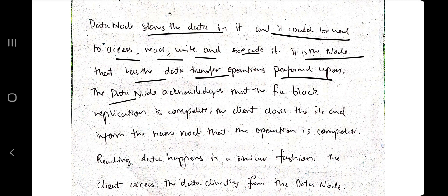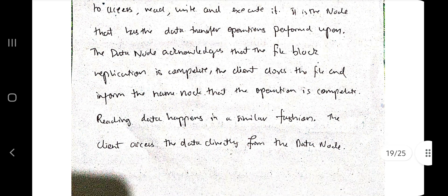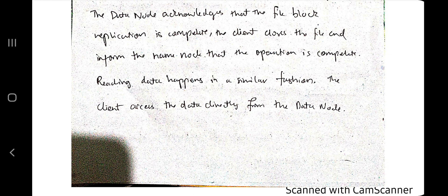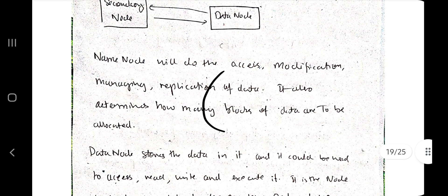The data node stores the actual data; it can be read, accessed, and used for execution. Data transfer operations are performed upon it, and the data node acknowledges the file block replication. Reading data happens in a similar fashion — the client accesses the data directly from the data node. Basically, the data node just stores the data, and the name node performs all operations like access, modification, managing, and replication.